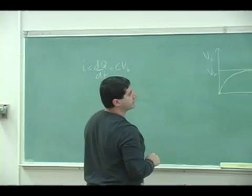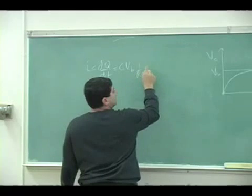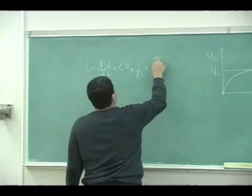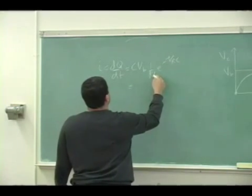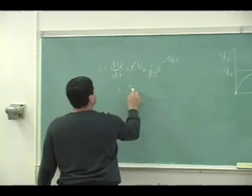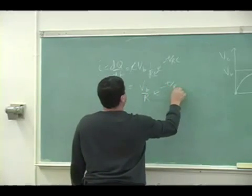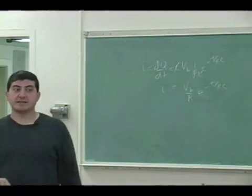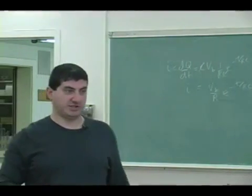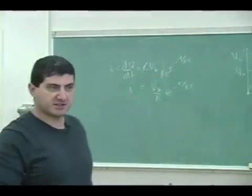Minus minus cancel, one over RC comes out. It's beautiful how this all works out. The C and the C cancel. The current is equal to VB over R, and that's exactly what we said initially. We said the initial current is going to be VB over R when we first started it.